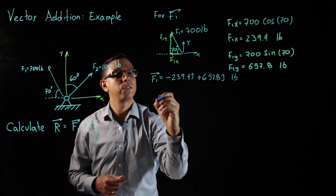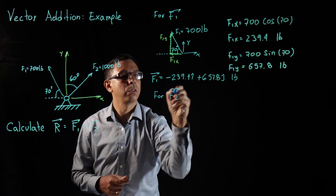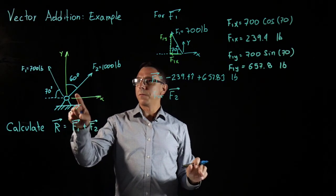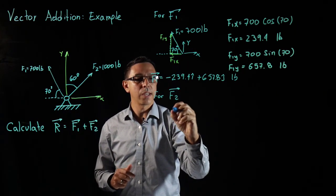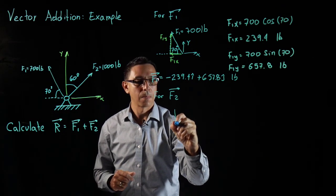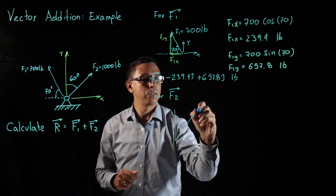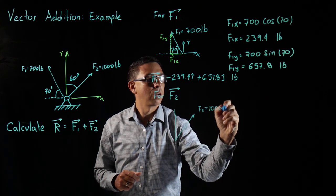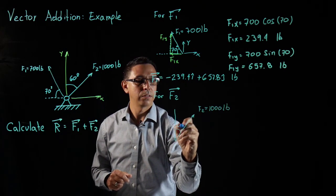Let's do F2. For F2 what do we get? We have F2, the triangle is different. So the triangle for that is going to be something like this. This is my vector F2 and the magnitude is 1000 pounds. This angle is 60 degrees